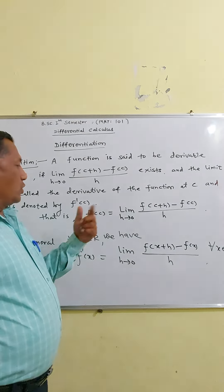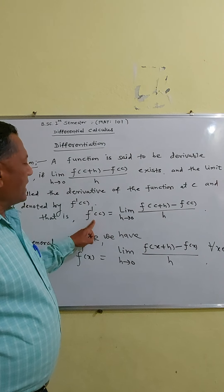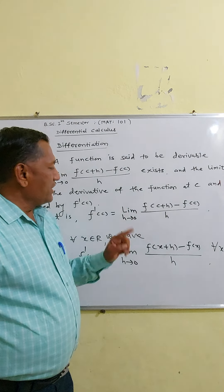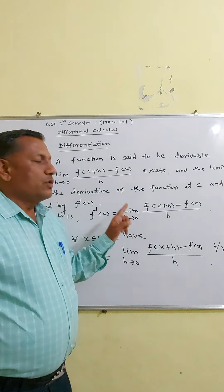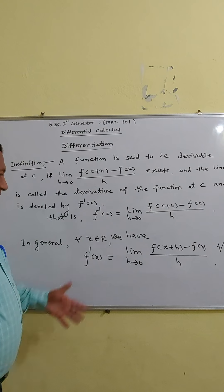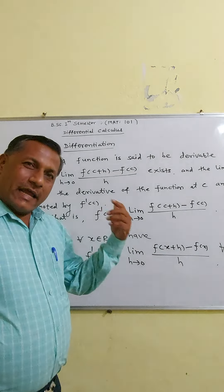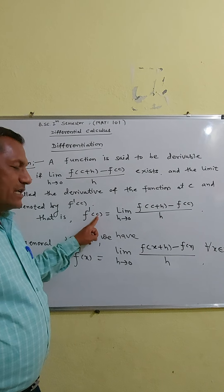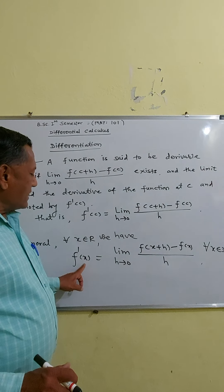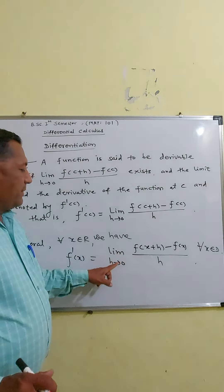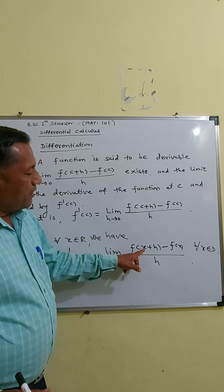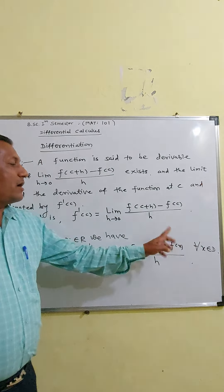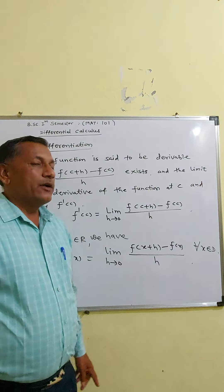Here, C is a point of the domain. That is, F′(C) = lim [F(C + h) − F(C)] / h as h tends to 0. Or, in general, for any x belonging to R, F′(x) = lim [F(x + h) − F(x)] / h as h tends to 0, for all x in the domain.